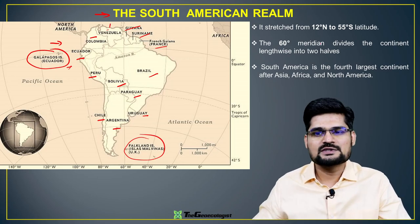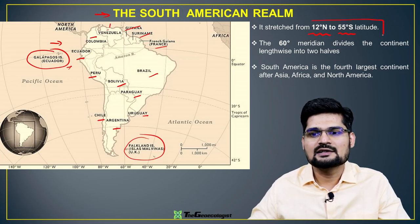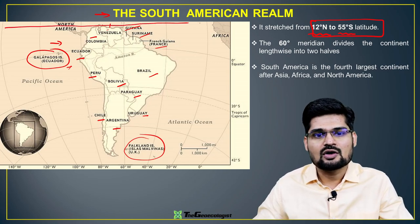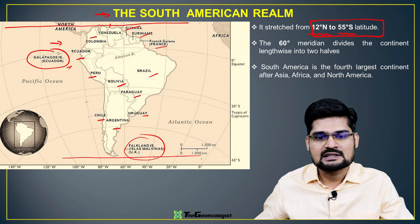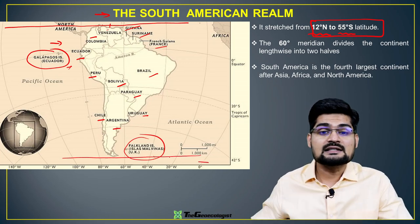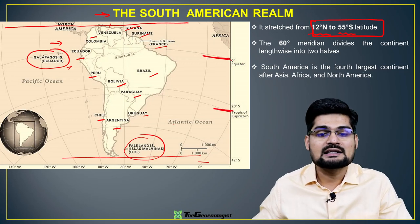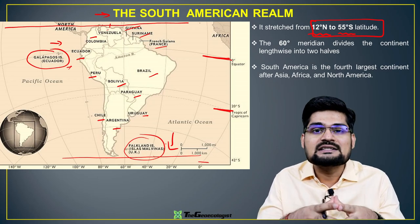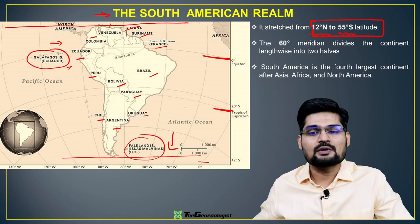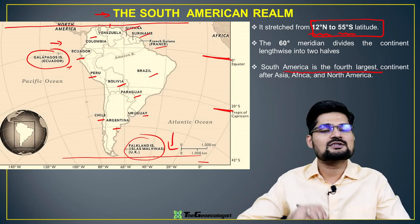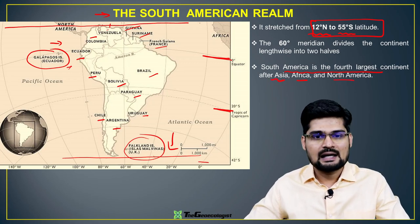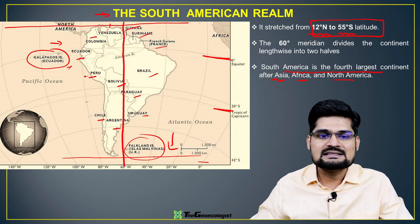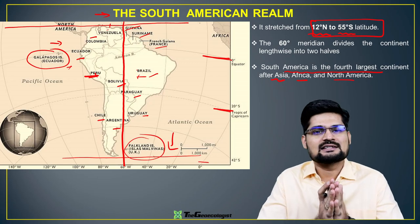Basic information: 12 degrees North to 55 degrees South latitude is the extent. This means the continent covers the equatorial region as well as tropical and subtropical regions, so it has a lot of variation in terms of climatology and related aspects. South America is the fourth largest continent after Asia, Africa, and North America. The 60-degree longitude bisects it into east and west halves.